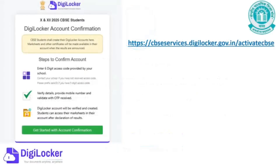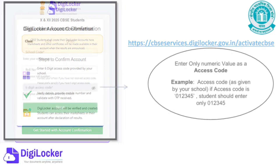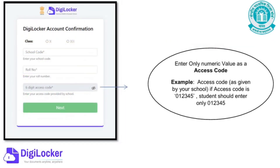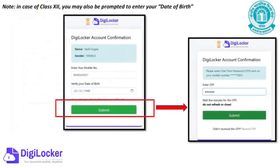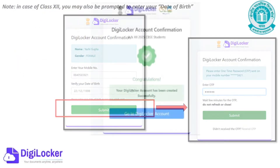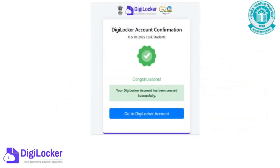Here's how you activate your account. Visit cbseservices.digilocker.gov.in/activatecbse. Select your class, enter your school code, roll number, and the six-digit access code. Confirm your mobile number and enter the OTP you receive. Your DigiLocker account is now ready.